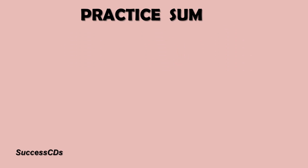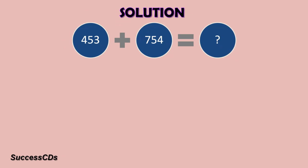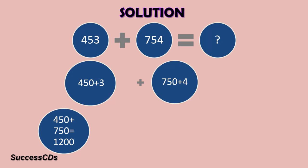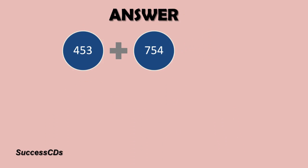Here is another sum for your practice: 453 plus 754. You have to find this sum by rounding off. 453 can be written as 450 plus 3, and 754 is 750 plus 4. First of all, we will add up 450 and 750 in our mind — the answer is 1200. We had added 3 and 4, that is 7, so we will add 7 to this. We get the answer as 1207. So 453 plus 754 gives us 1207.